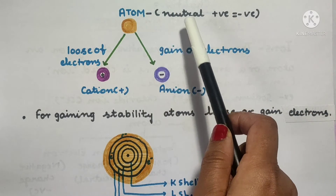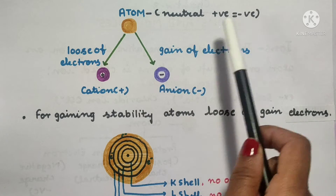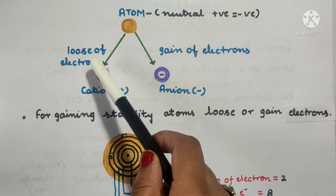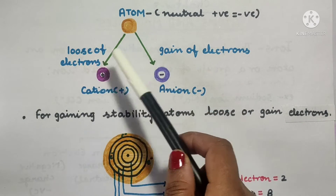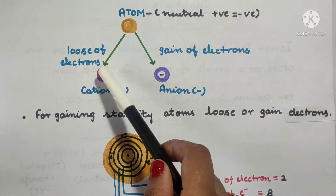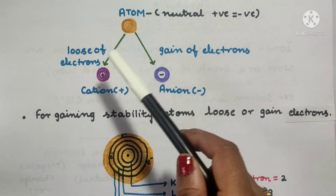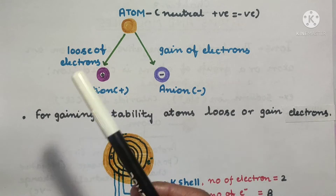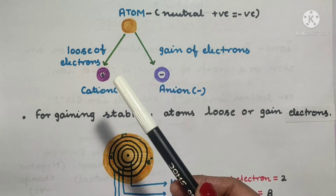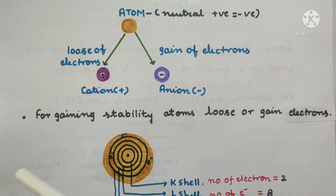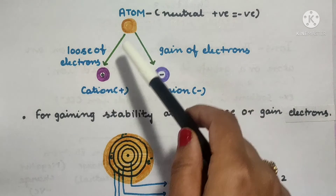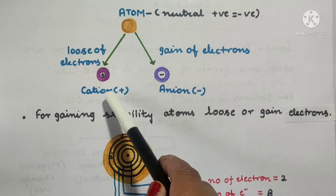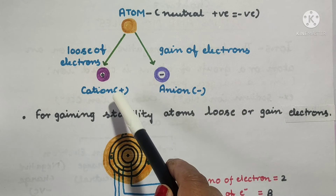But if an atom loses electrons, the negative charge becomes less than the positive charge, so the particle becomes positively charged. We call this a cation.